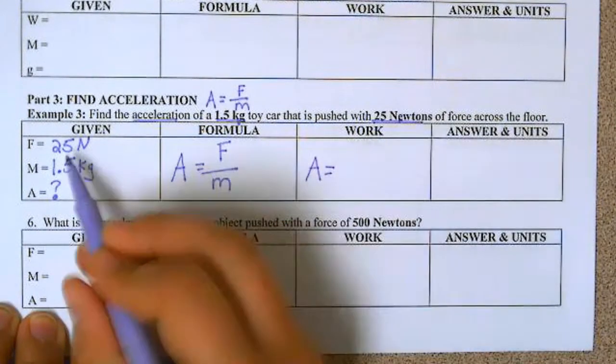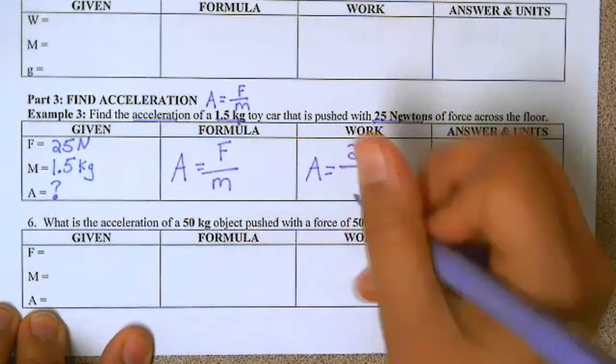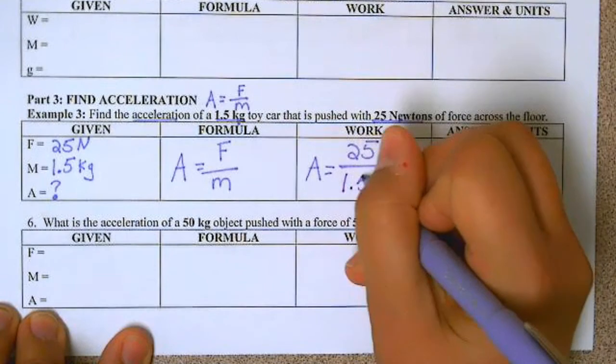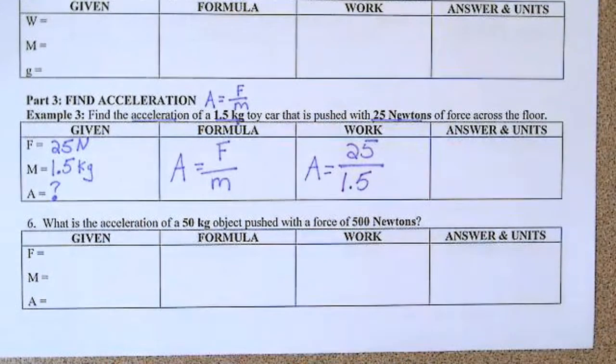So F is 25, mass is 1.5. So we're going to take 25 and divide it by 1.5.